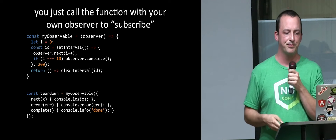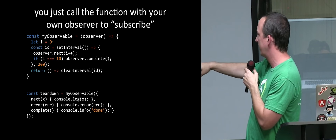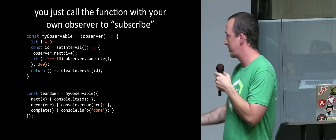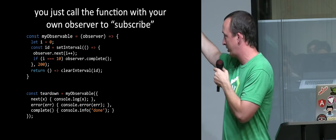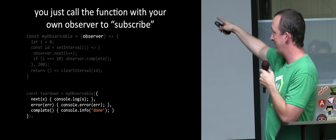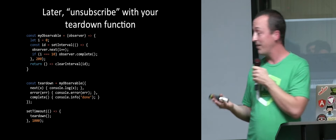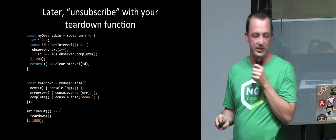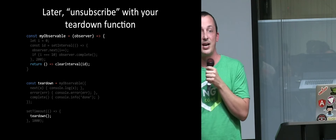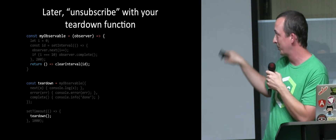What you'll see is I'm calling next and complete on my observer. I'm setting up an interval, and every time my interval ticks, I'm going to call next, and if my interval ticks 10 times, I'm going to call complete. The function also returns some teardown logic — in this case a function that calls clearInterval. When you call this function with your own observer — a plain object with next, error, and complete methods — that's how you subscribe to it. If observable were just a function, you'd call it by passing in an observer and it executes that logic.